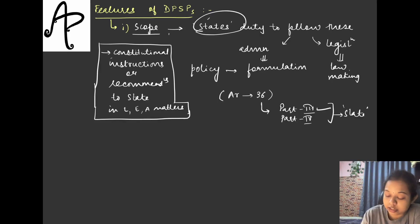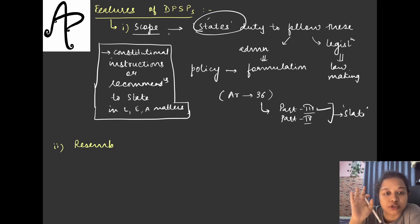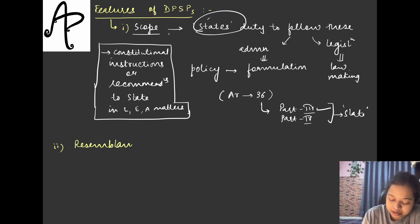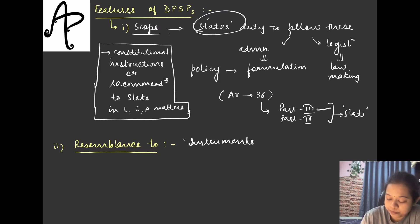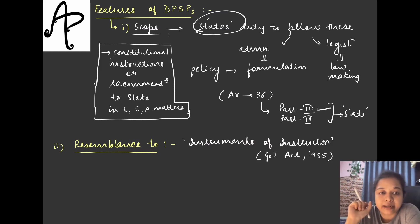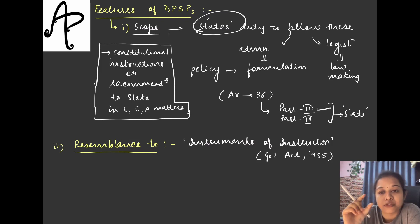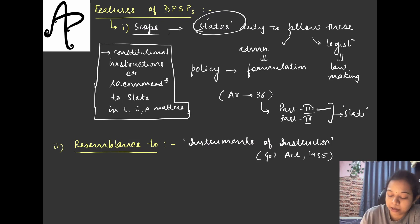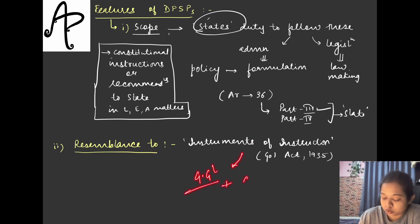Moving on to the next feature: what do these principles resemble? They have been borrowed from the Irish constitution, but these principles resemble something known as the instruments of instruction. In the Government of India Act 1935, certain instructions were given — this was considered the instrument of instruction — to the Governor General and separately to the governors of the different provinces, instructing them that the British government expected them to carry out these instructions in their area.